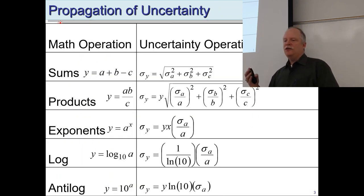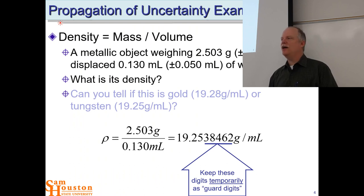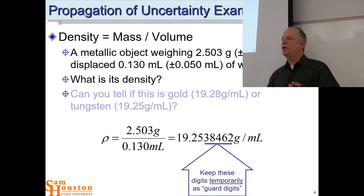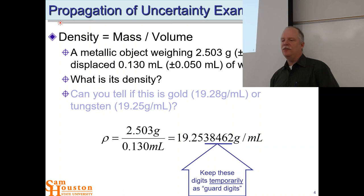These are the equations we'll use — the propagation of uncertainty table we've used for a whole year now. The simplified versions are shown for sums, products, and exponents. Let's use an example: say we had a piece of evidence that was a metal chunk. We weighed it — 2.5 grams — and we displaced water in a graduated cylinder to measure the volume change. We have mass and volume, so we can look up the metal in a density table. We think it might be gold or tungsten, which are two very close metals in terms of density.